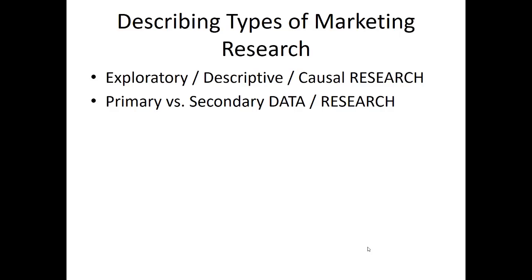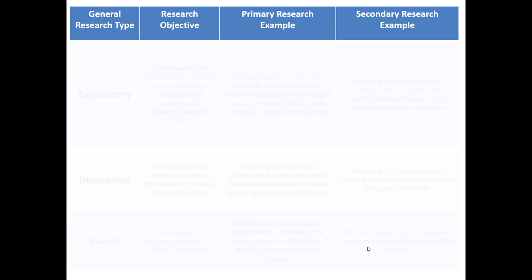Another way of describing types of marketing research is to recognize the differences between exploratory, descriptive, and causal research, and to identify the difference between primary and secondary data. Primary research is research that you conduct yourself for a very specific purpose — you design the study, collect the data, analyze it, and present the results. Secondary research, on the other hand, is research produced by somebody else that you intend to make use of. It is often quicker and more convenient, but the frustration is that it may not be perfectly designed for your needs.